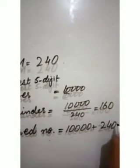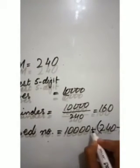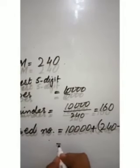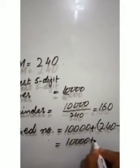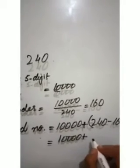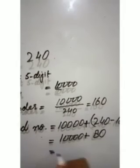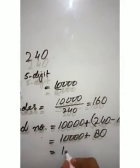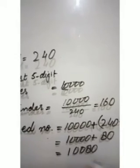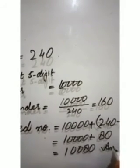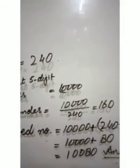Required number = 10,000 + (240 − 160) = 10,000 + 80 = 10,080. So the smallest five-digit number divisible by 16, 24, and 30 is 10,080. Thank you, students.